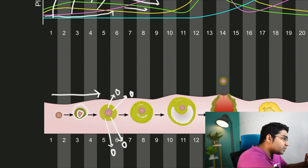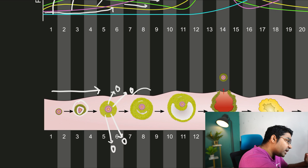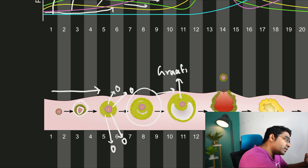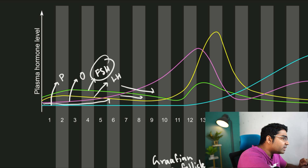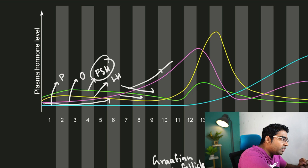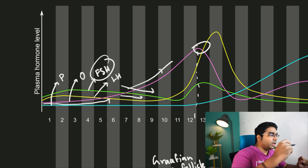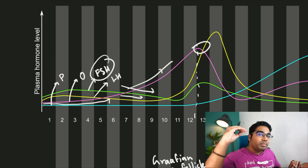In the ovaries, the mature follicle survives and continues to develop into the Graafian follicle. This mature follicle is not affected by the drop in FSH and continues to secrete estrogen, so the estrogen level — the pink line — continues to rise and peaks at around day 12.